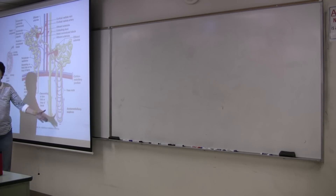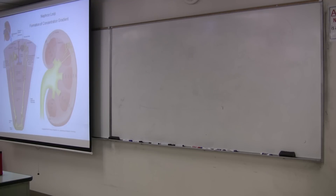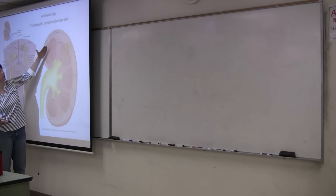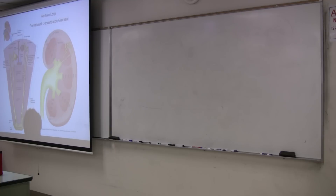The role of the nephron loop is to set up an osmotic gradient in the interstitial fluid of the medulla. Here is the cortex and the medulla, and on this diagram you can see the increase in osmolality. Do you know what osmolality refers to? We've used the term osmotic pressure. If you have a mole of glucose and a mole of sodium chloride, which one is going to have the higher osmolality, or will they both be the same since they're both moles?